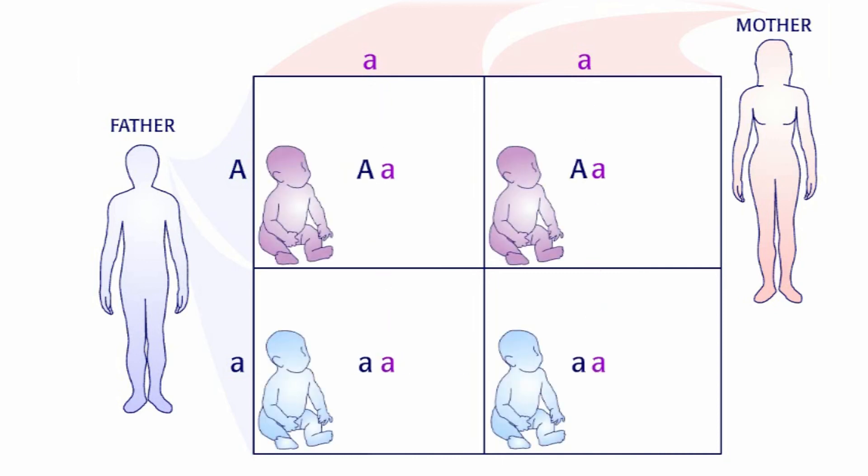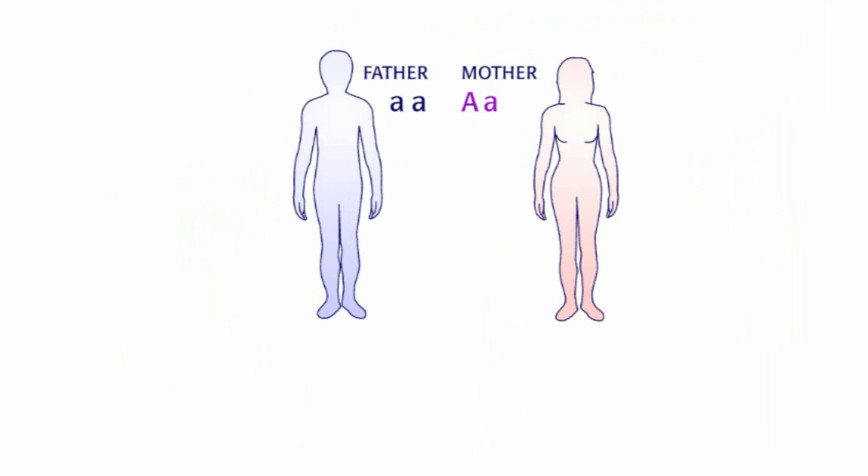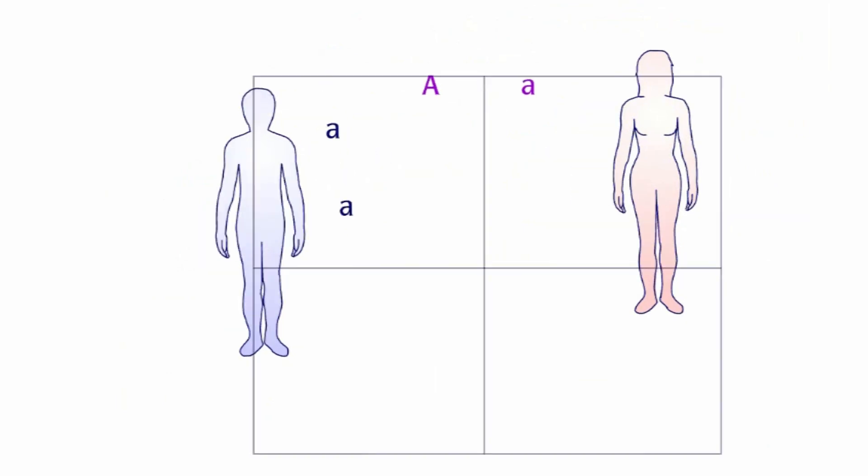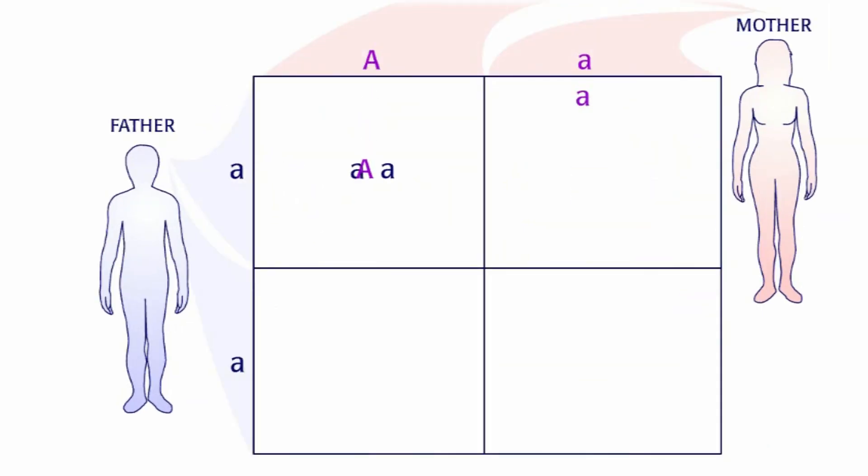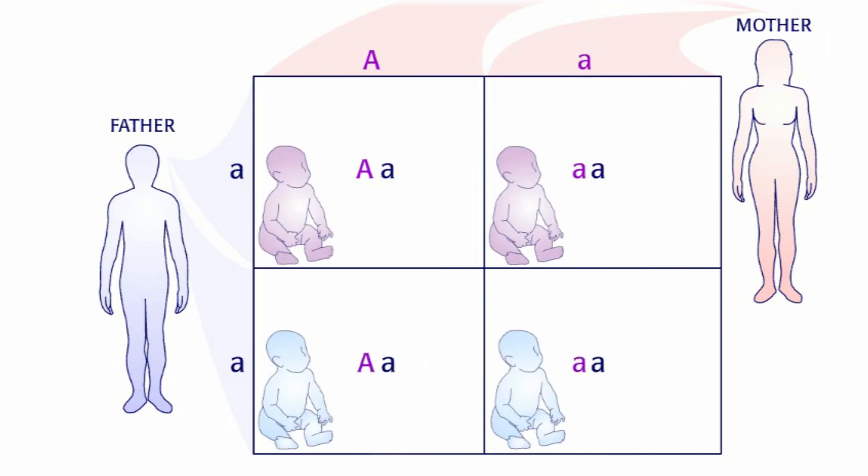Here capital A is the mutated gene. In a Punnett square, each parent donates its Alzheimer's genes to the child. The same chances apply to the opposite situation when the woman has the Alzheimer's mutation and the man does not.